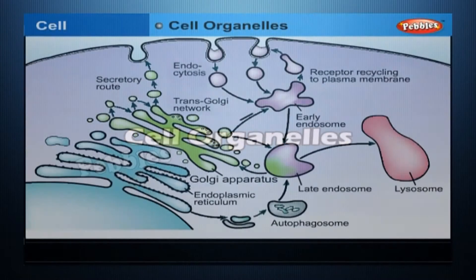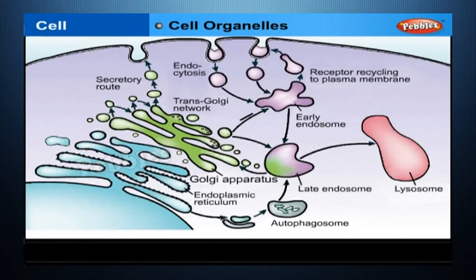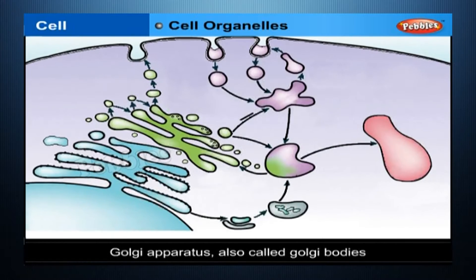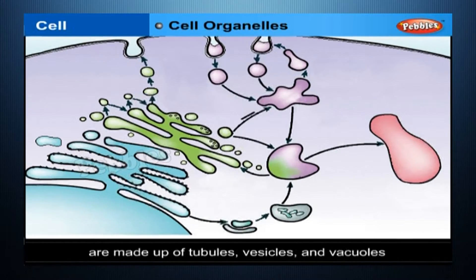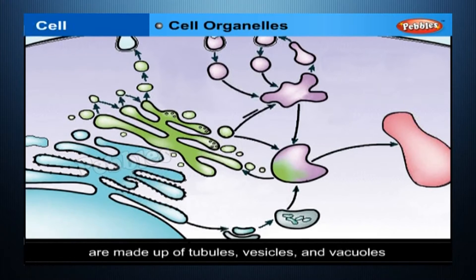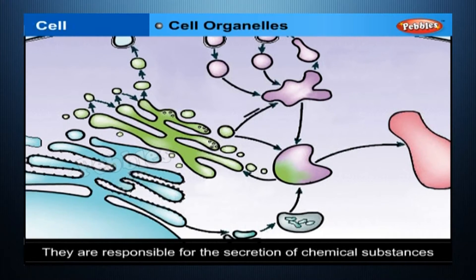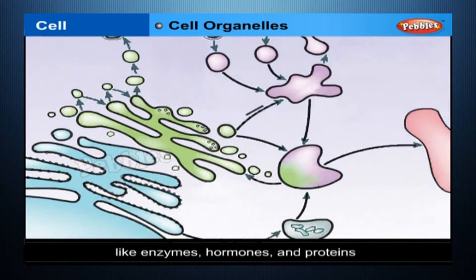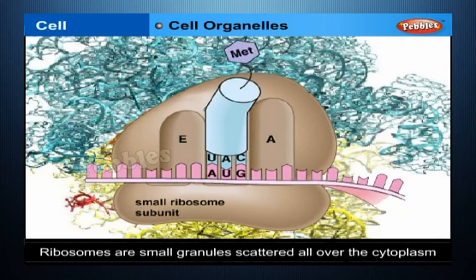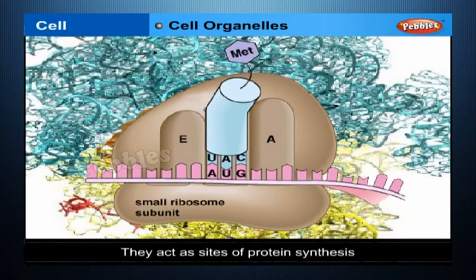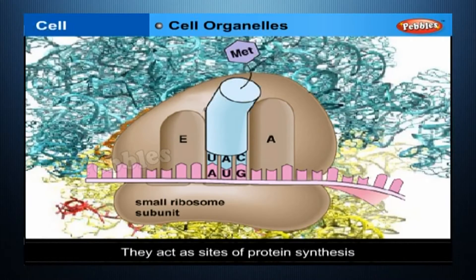Cell Organelles. The figure shows a labeled diagram of a generalized cell. Golgi apparatus, also called Golgi bodies, are made up of tubules, vesicles and vacuoles. They are responsible for the secretion of chemical substances like enzymes, hormones and proteins. Ribosomes are small granules scattered all over the cytoplasm and act as sites of protein synthesis.